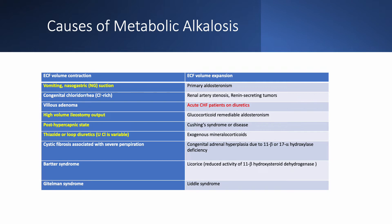Metabolic alkalosis with extracellular fluid volume expansion includes primary aldosteronism, renal artery stenosis or renin-secreting tumors, acute CHF patients on diuretics — probably the only common cause in this category — glucocorticoid-remediable aldosteronism, Cushing syndrome, exogenous mineralocorticoids, congenital adrenal hyperplasia, licorice use — which reduces activity of 11-beta-hydroxysteroid dehydrogenase — and Liddle's syndrome, which is very, very rare.